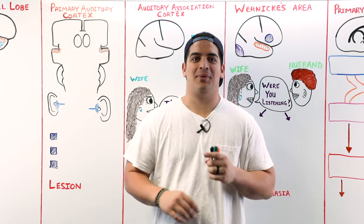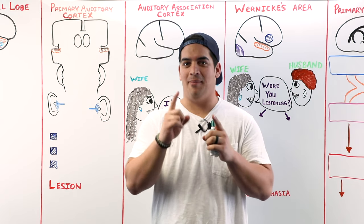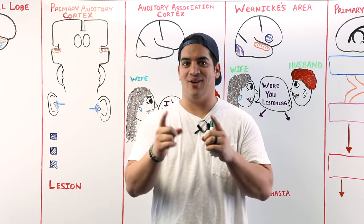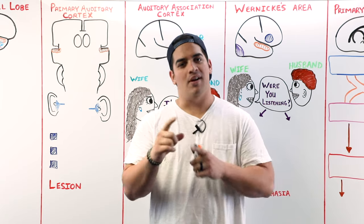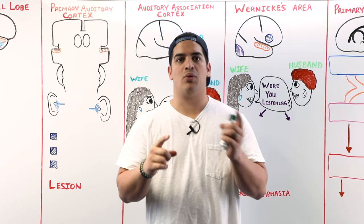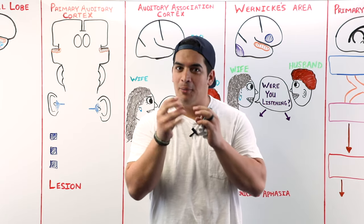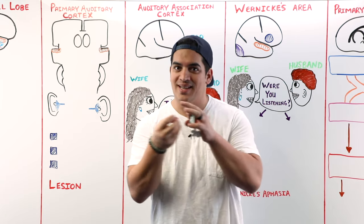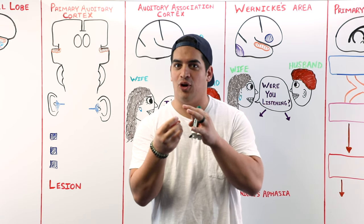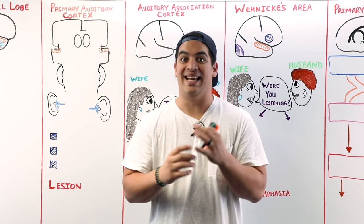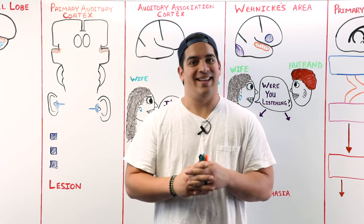Alright Ninja Nerds, in this video today we're going to talk about the cerebral cortex, primarily focusing on the temporal lobe. We'll also talk a little bit towards the end in more detail about another mini lobe tucked deep inside of the temporal lobe called the insula. Alright, let's go ahead and get started.